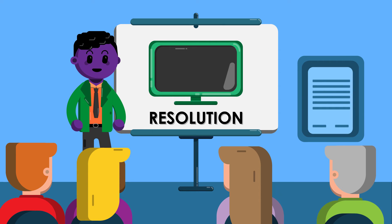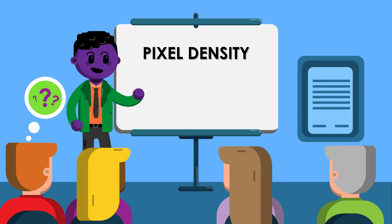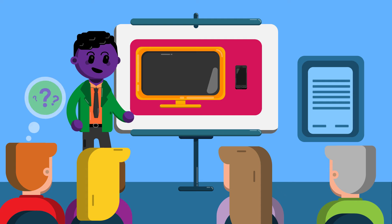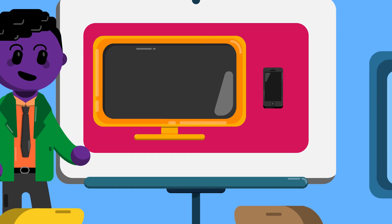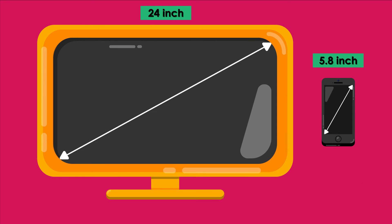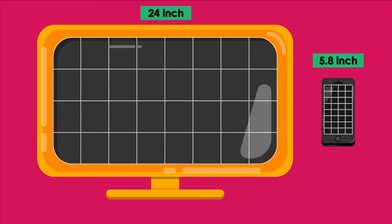Apart from the resolution, digital screens possess a property known as pixel density, which is commonly measured in pixels per inch or dots per inch. It is easily comparable when considering a computer monitor and a smartphone, both with a resolution of 1920 by 1080. In the smartphone, the pixels are more densely packed into the raster. With roughly 2 million pixels crammed into a 5.8 inch screen, the pixel size must be smaller compared to the pixel size of the 24 inch monitor display that is also made up of 2 million pixels.